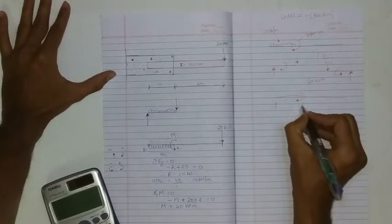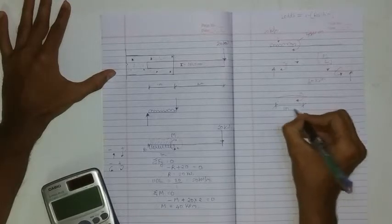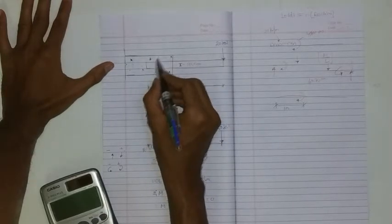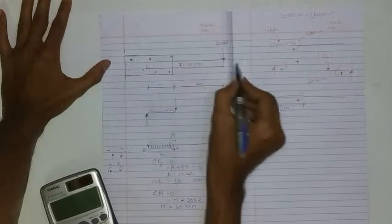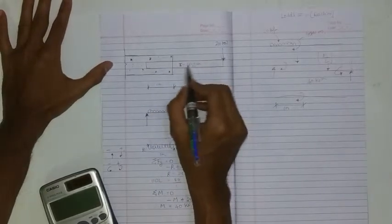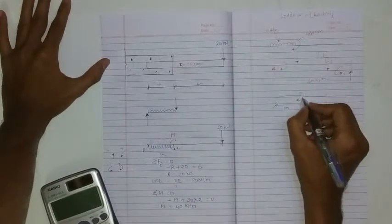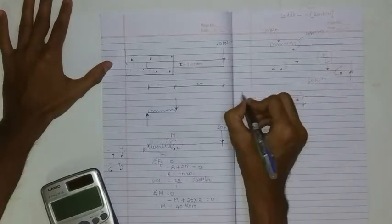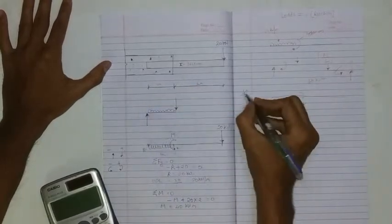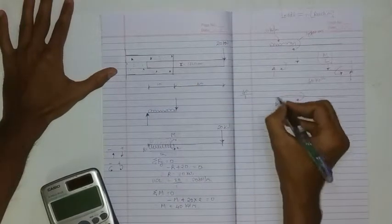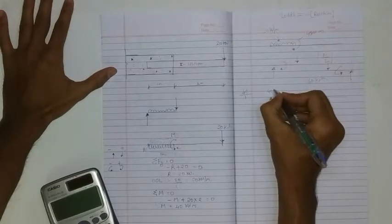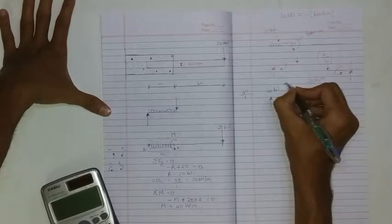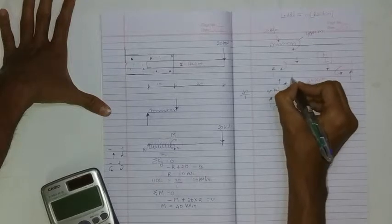Now my span is one meter. Why one meter? Because the resisting action shall be provided by this concrete. So we can now transmit this moment into the forces. 40 kilonewtons divided by the span, one meter, so I have a reaction here that will be 40 kilonewtons. The couple should be this and this.